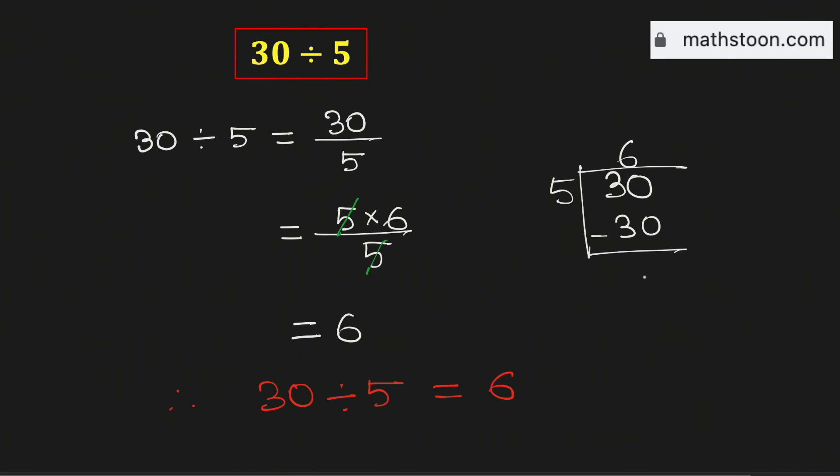Now subtract we will get 0. Therefore 30 divided by 5 is equal to 6 and this is our final answer.